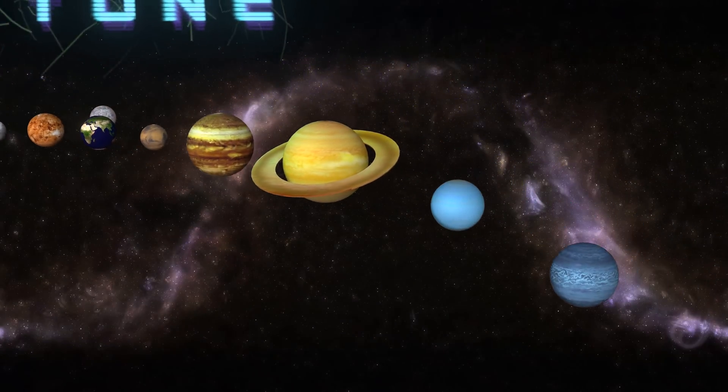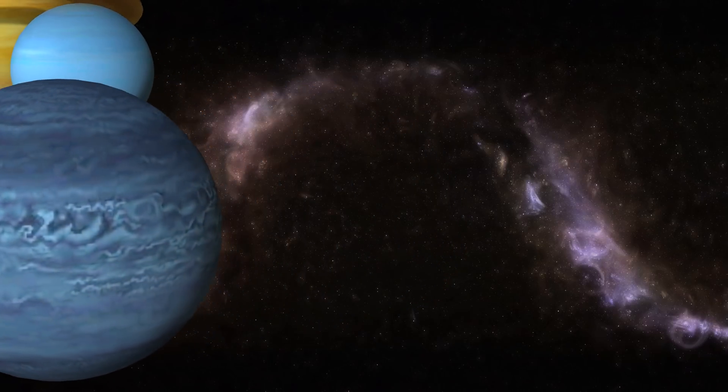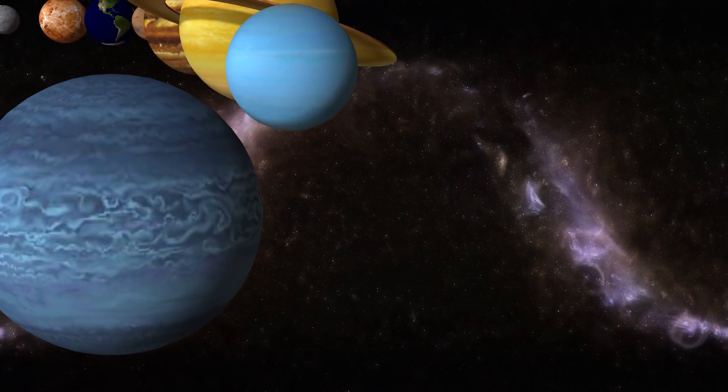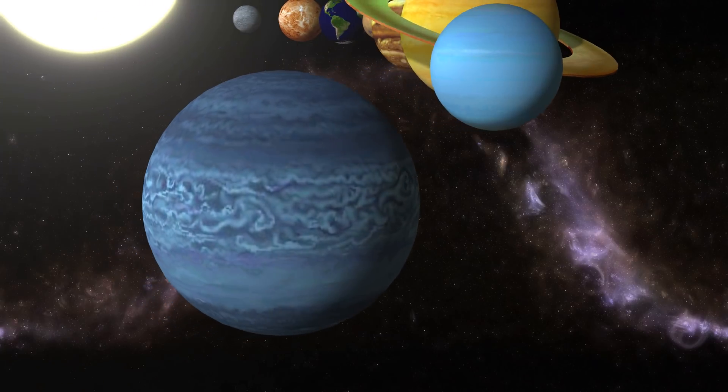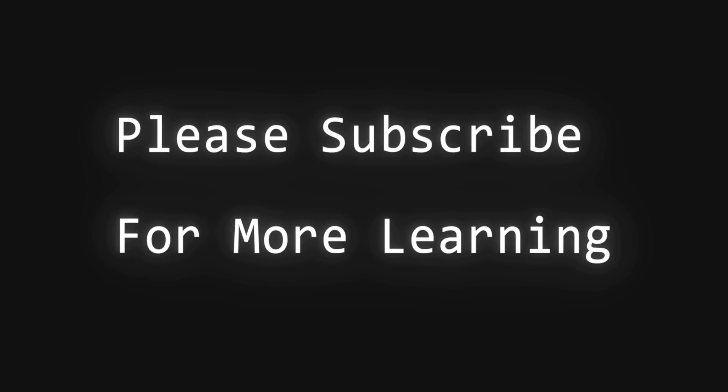Neptune is dark, cold and very windy. It's the last of the planets in our solar system. Its atmosphere is made of hydrogen, helium and methane.